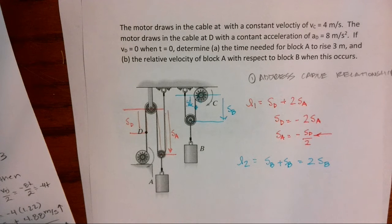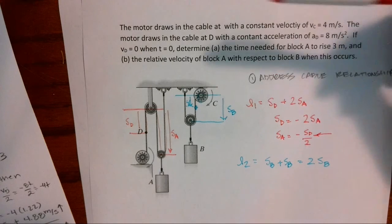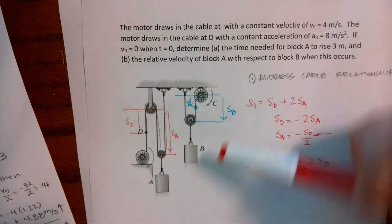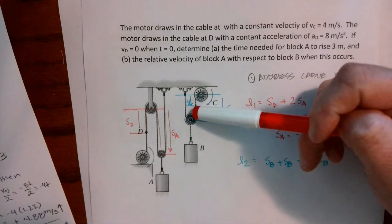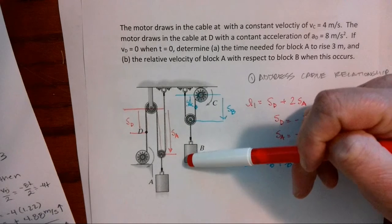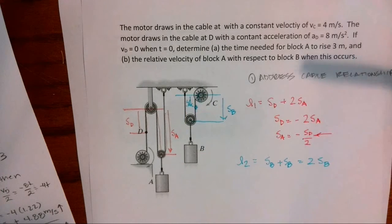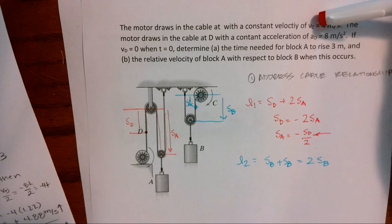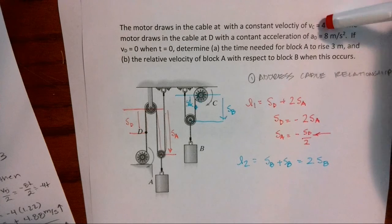So we have a motor that draws in the cable with a constant velocity, VC equals four meters per second. So this motor is pulling up here, which is going to cause this mass of B to rise. And it has a constant velocity of four meters per second. That also tells us that the acceleration is zero.